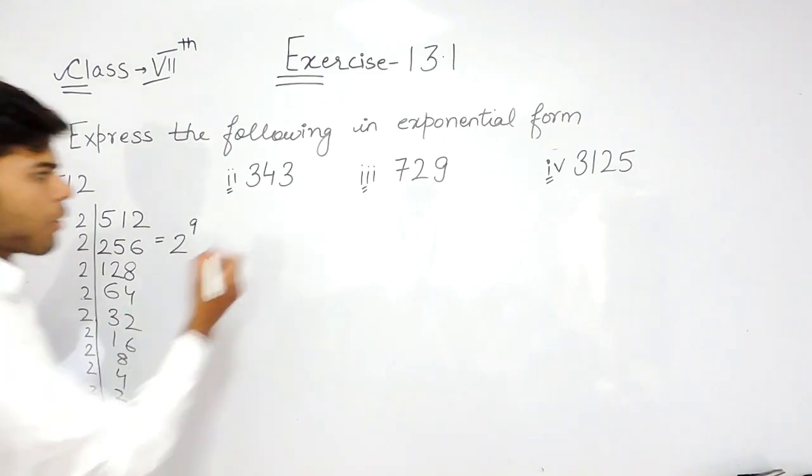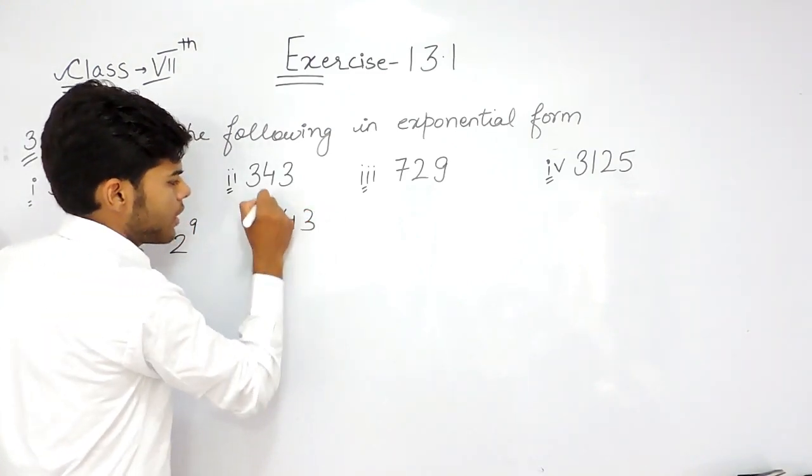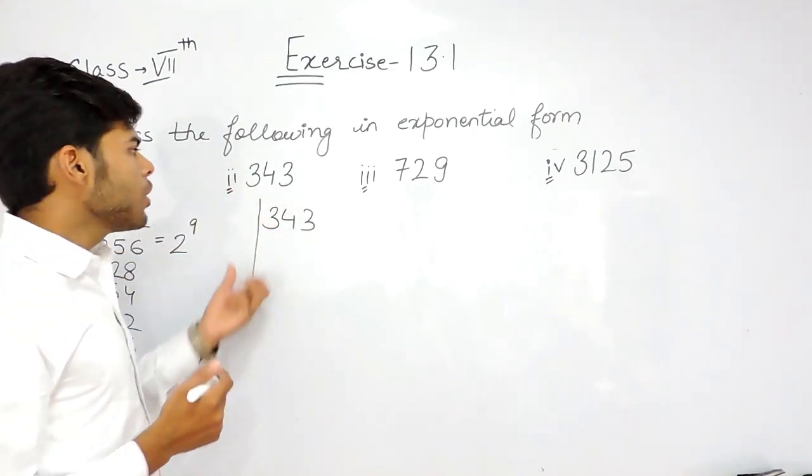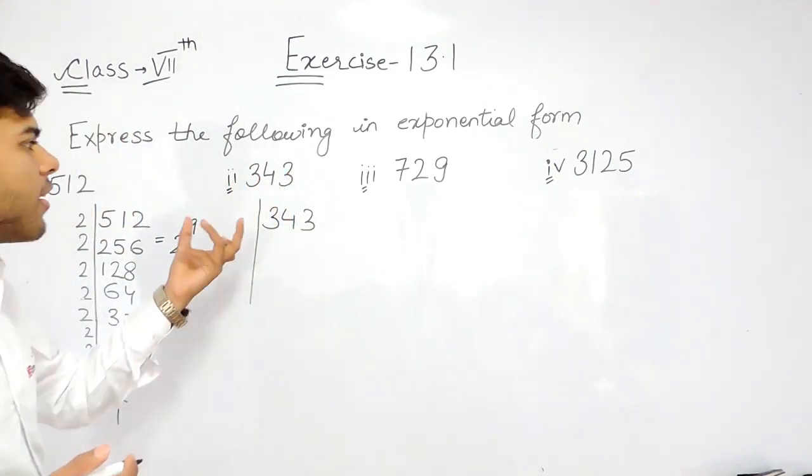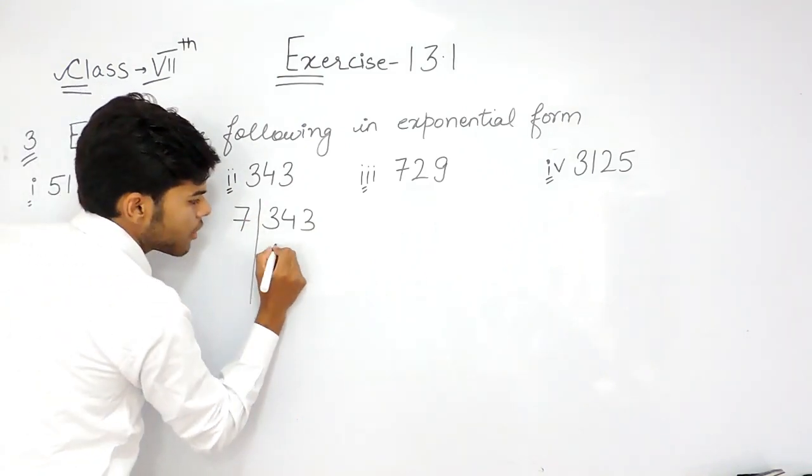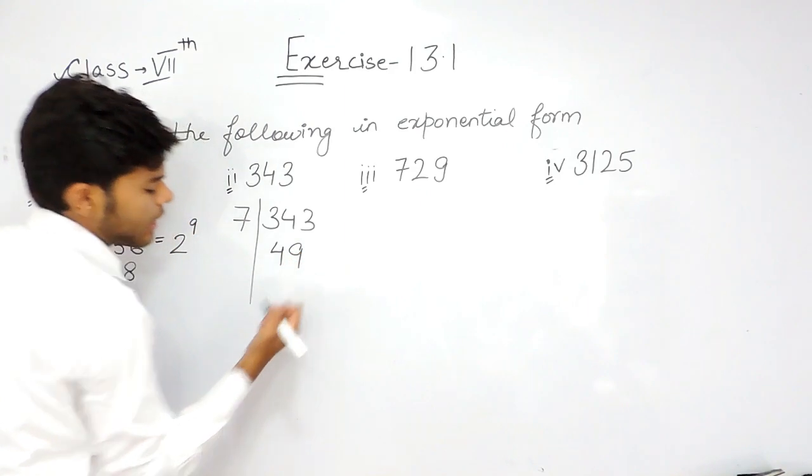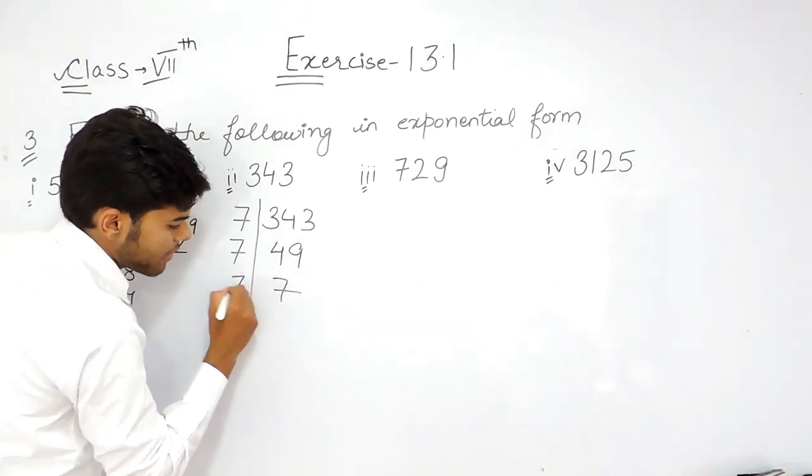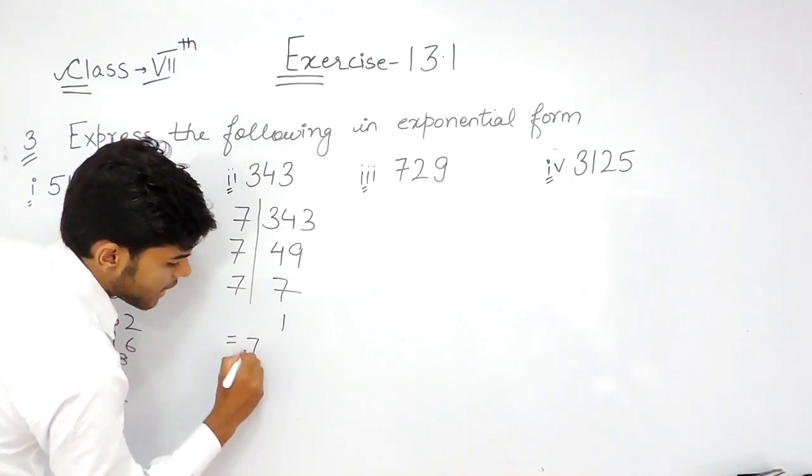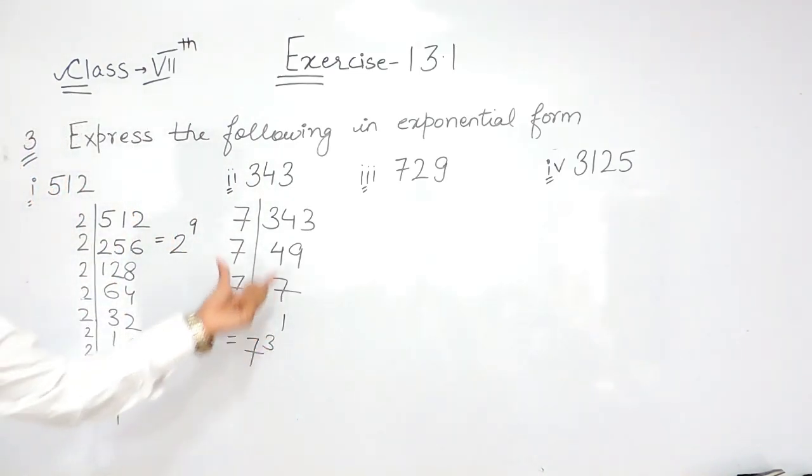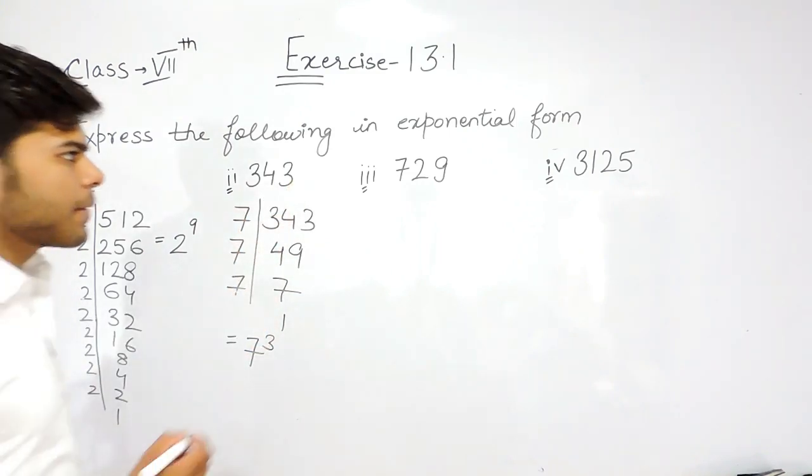Now, coming to 343. 343 is a number that you should know comes in the table of 7. 7 times 49, 7 times 7, 7 times 1. So this can be written as 7 to the power of 1, 2, and 3. This means that 343 is the cube of 7.